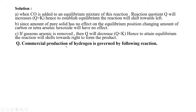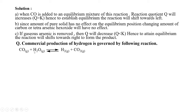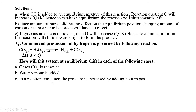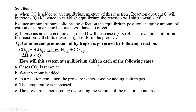Next problem: commercial production of hydrogen is governed by the reaction CO + H2O → H2 + CO2, where delta H is negative (exothermic). We need to determine how the equilibrium shifts in each of the following cases: first, gaseous CO2 is removed; second, water vapor is added; third, pressure is increased by adding helium gas; fourth, temperature is increased; fifth, pressure is increased by decreasing the volume of the reaction container.